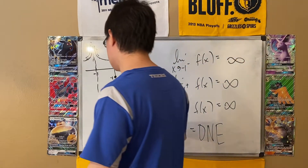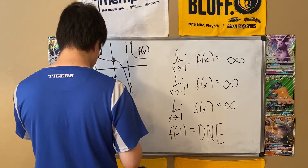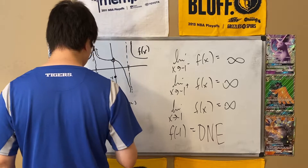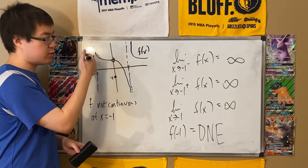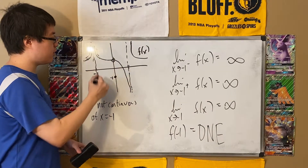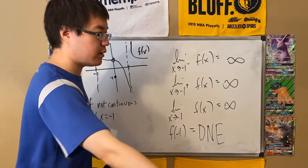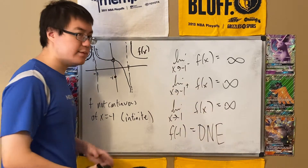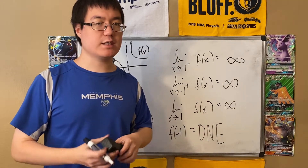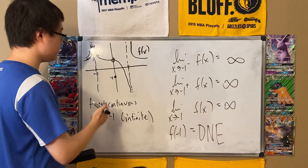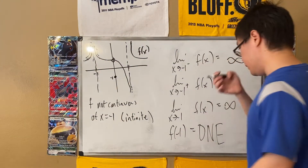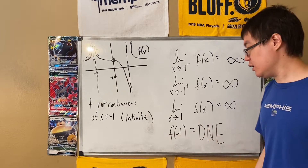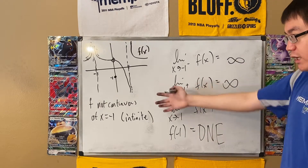The function value f(−1) doesn't exist because there's a vertical asymptote there — no closed dot. So f is not continuous at x = −1. This is called an infinite discontinuity. The three main types of discontinuity are: removable (a hole), jump (from one piece to another), and infinite (vertical asymptote). Since the limit is infinity (not a finite number), there's no way for the limit to equal the function value, confirming that f is not continuous.